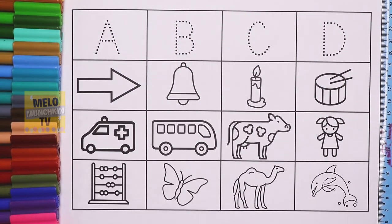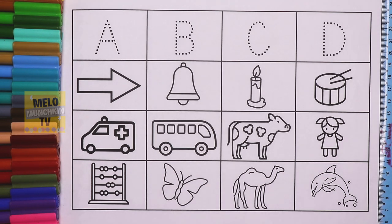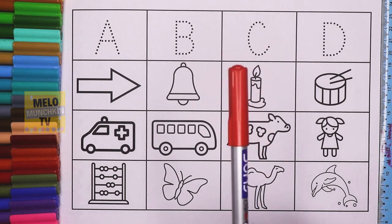Hello kids! Today we will learn alphabets from A to D — that means A, B, C, and D — along with the objects or things starting with these letters. So let's get started! The first color I'll use is red.